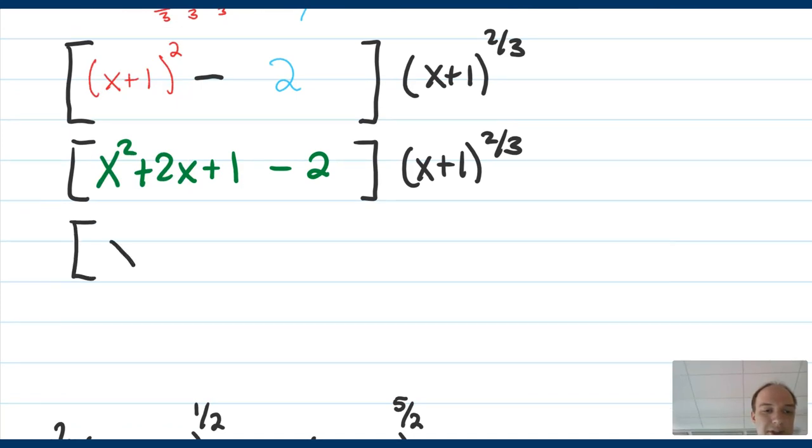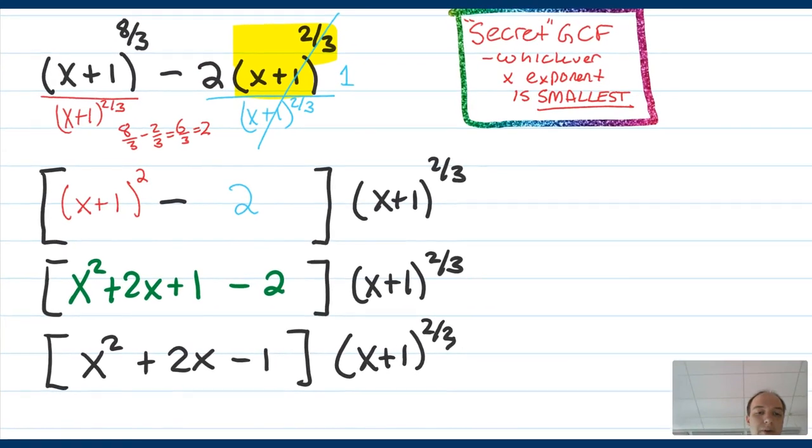Final answer here, it's just going to be x squared plus 2x and then 1 and 2 combine and make minus 1 times x plus 1 quantity to the 2 thirds. Here's all that problem together for your enjoyment.